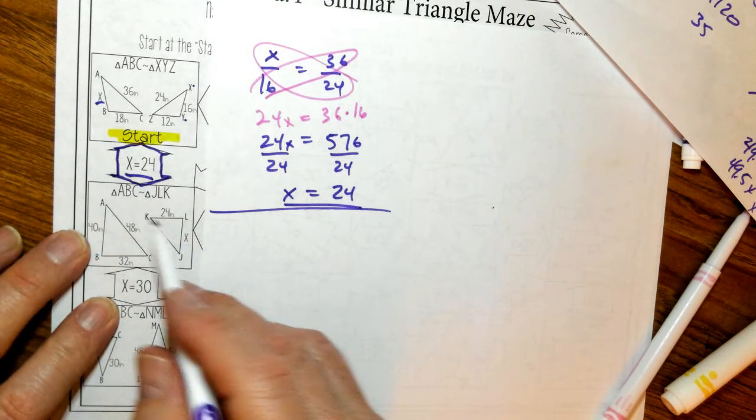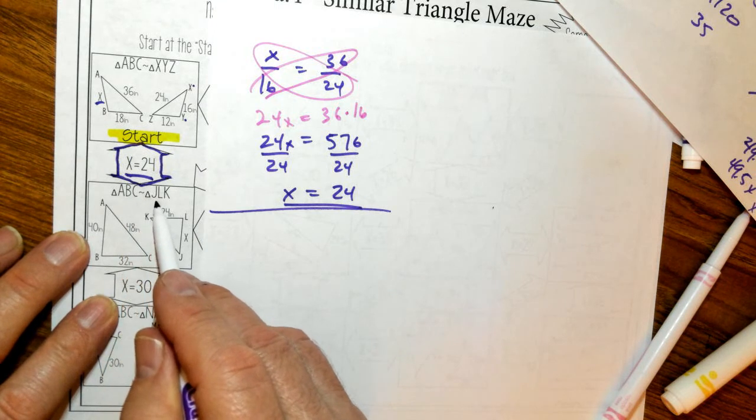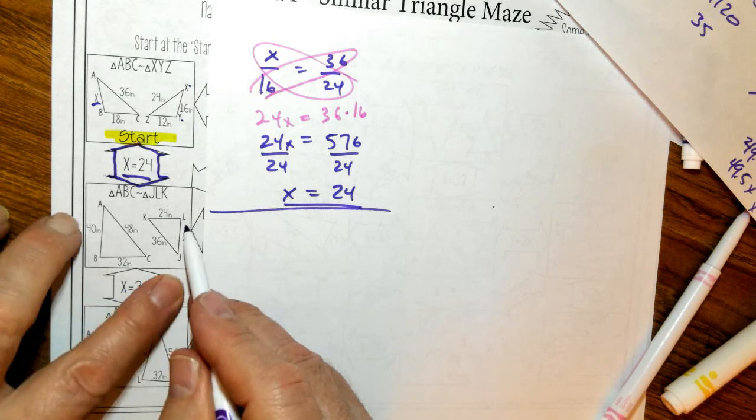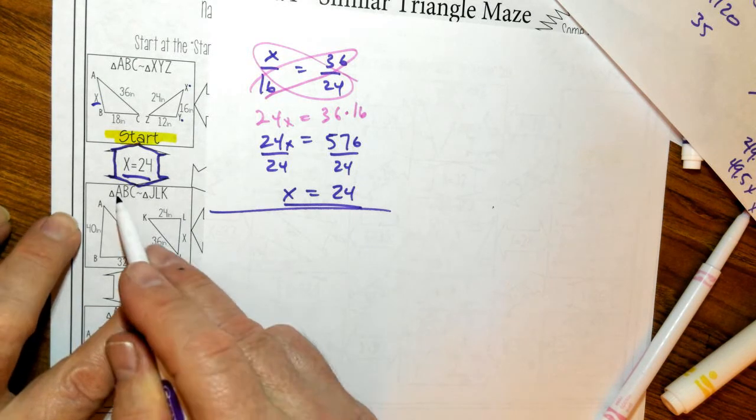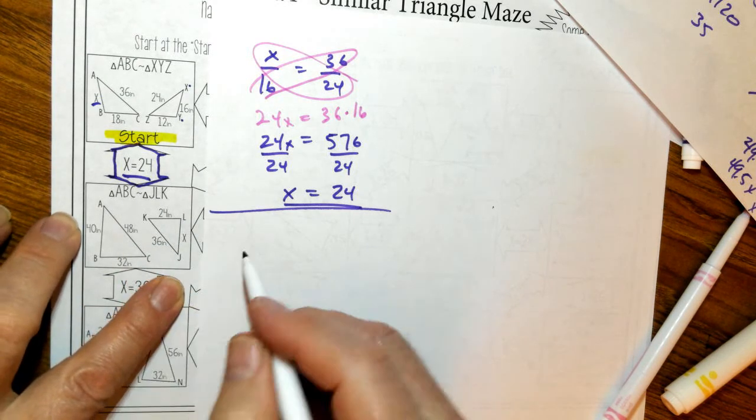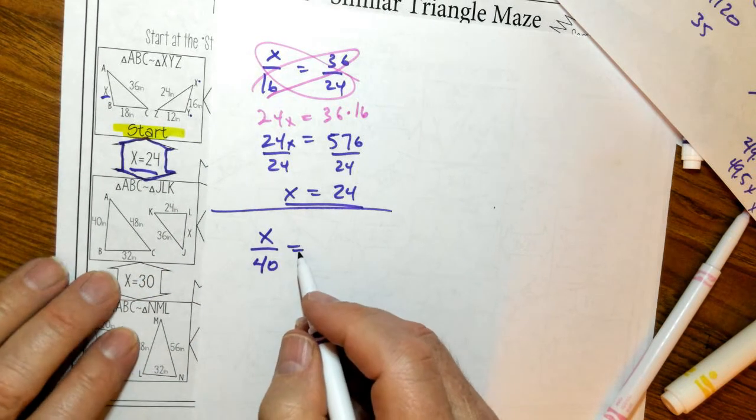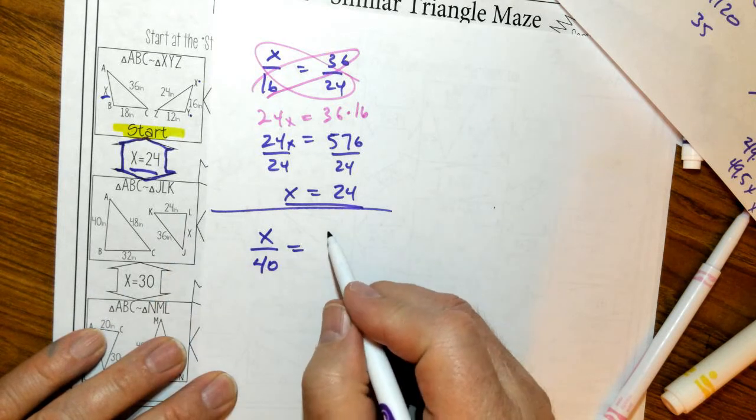So this one is triangle ABC is similar to triangle JLK. So my X is JL. So I'm looking at AB. So I know that X corresponds to 40. And then I know that 32 and 24 map to each other.